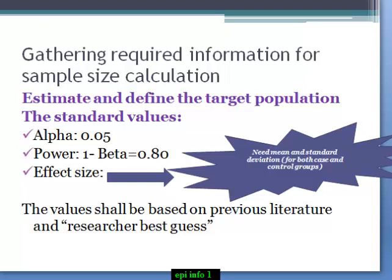You had to estimate and define your target population from which you will withdraw your samples. There are some standard values: 0.05 for alpha, 0.8 for the power and you should know the effect size, percentage of exposed and unexposed groups.